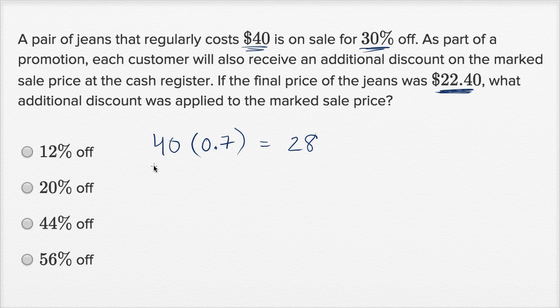Yeah, seven times four is 28. 0.7 times 40 is also going to be 28. So it's going to be $28 would just be the 30% off.